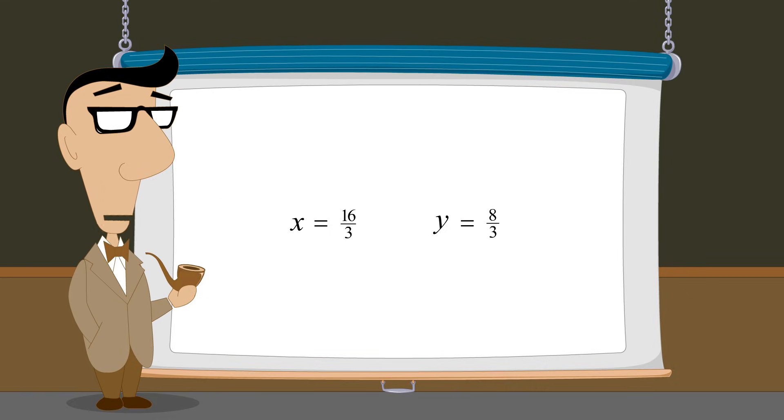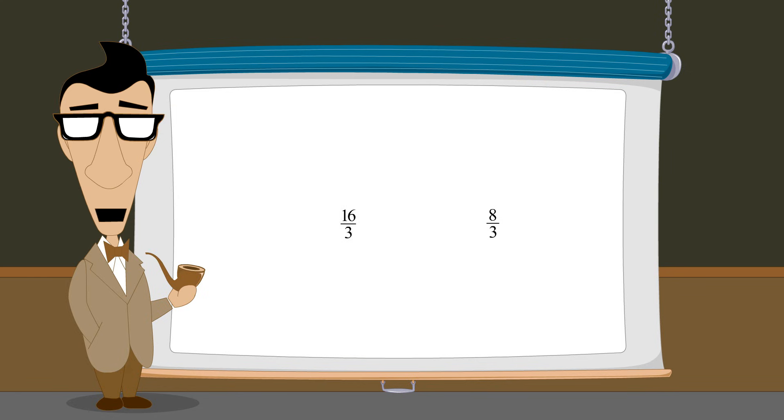So the values of x and y which satisfy both equations are sixteen-thirds and eight-thirds. These are the values of the x and y coordinates of the intersection point of the two graphs.